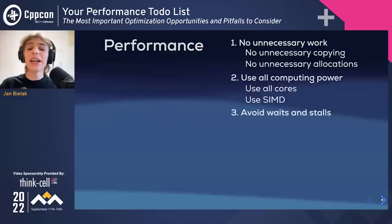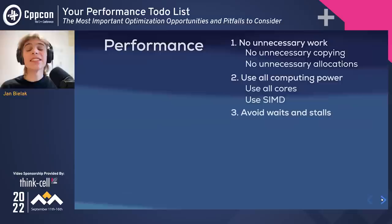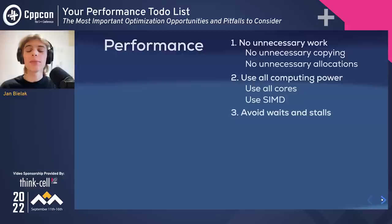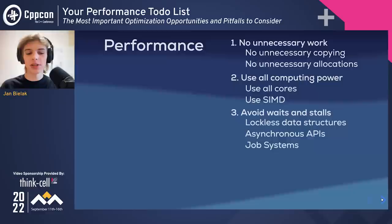The third goal is avoiding unnecessary waits and stalls. A program consists of many computations which depend on one another. When a program is parallelized to take advantage of multiple cores, performance gains are often smaller than expected, because the extent to which computations can be parallelized is limited by dependencies between them. When a thread is dependent on another thread that hasn't completed yet, useful time is lost. The most common solutions are using lock-free data structures, non-blocking asynchronous APIs, or a job system.